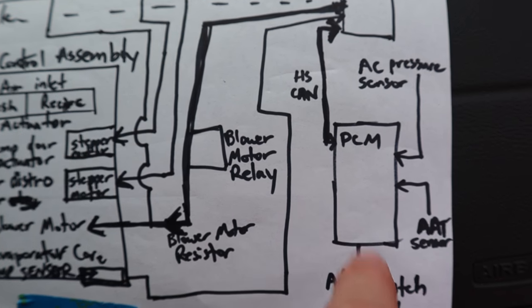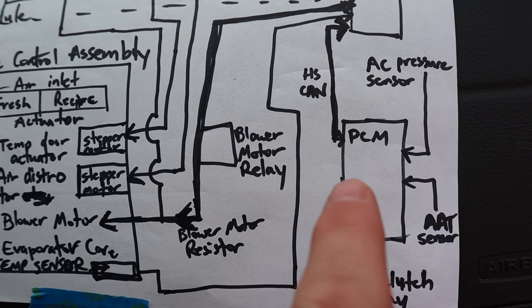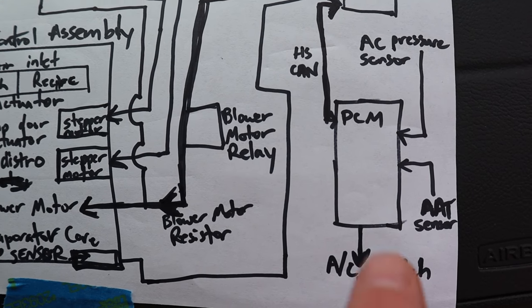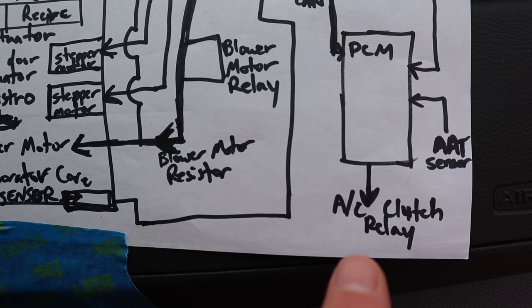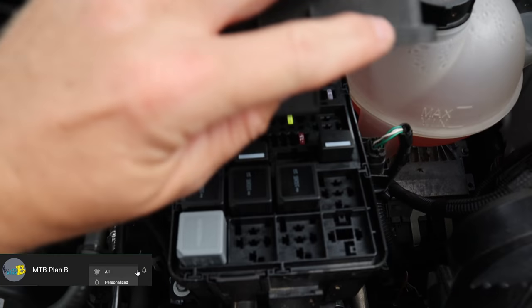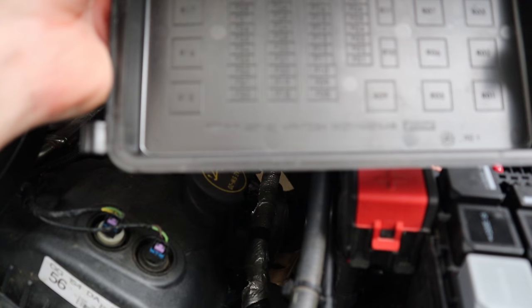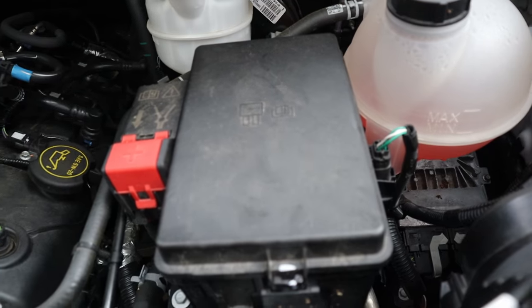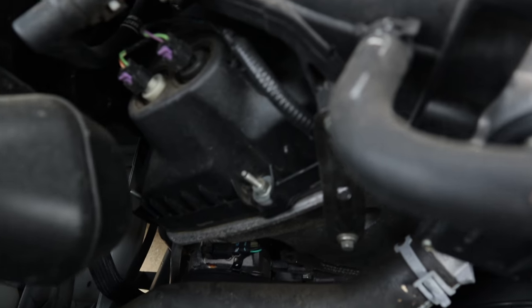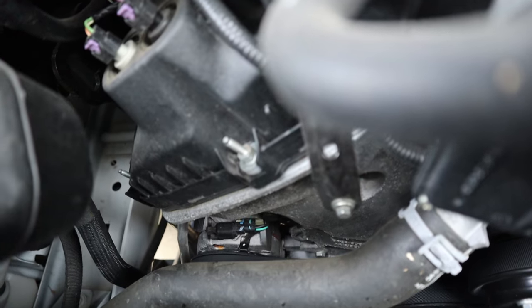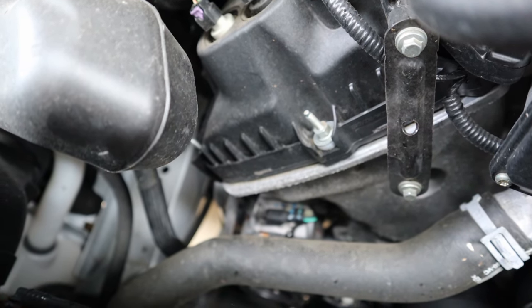The PCM controls and monitors certain aspects of the powertrain like the engine and transmission. As the AC request signal comes to the PCM, if certain logic is met, the PCM will energize the AC clutch relay, which is located under the hood. In the battery junction box, it's the R10 relay. When that relay is energized, it energizes the coil on the AC compressor.